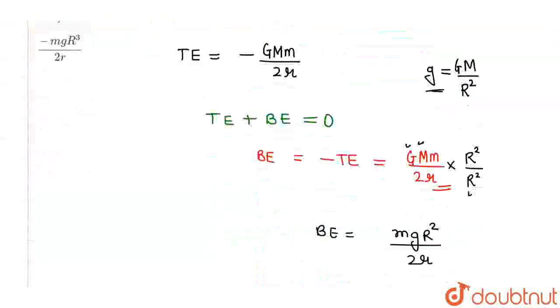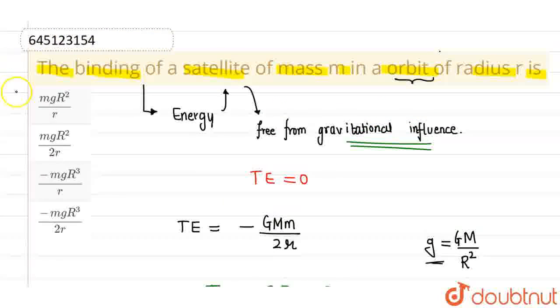Now, if you look at the options, the correct option is option 2, which is mgr²/2r, and all other options are incorrect. I hope you understood. Thank you.